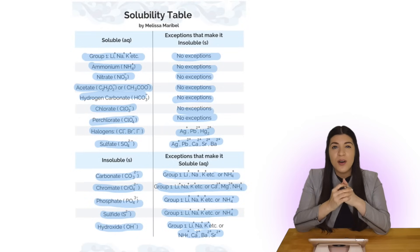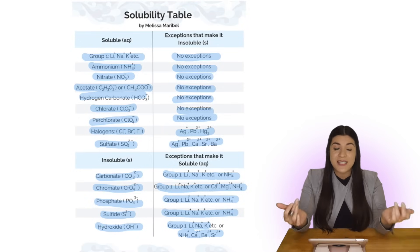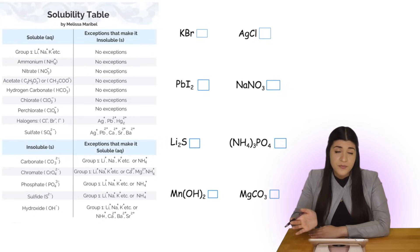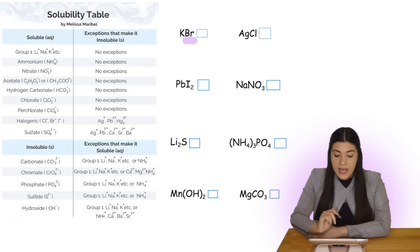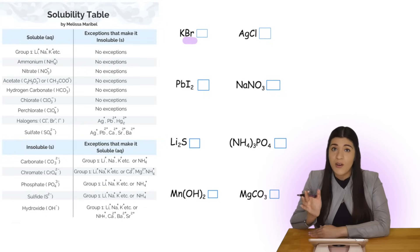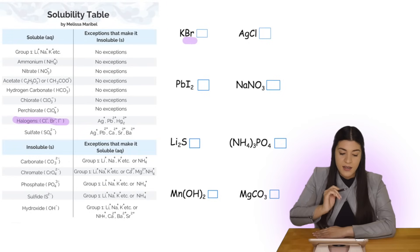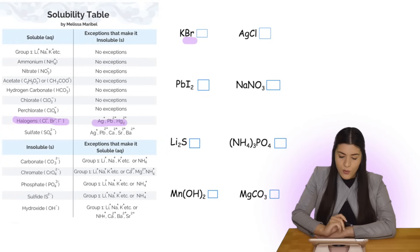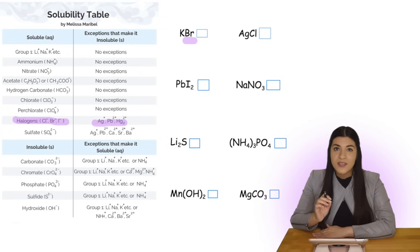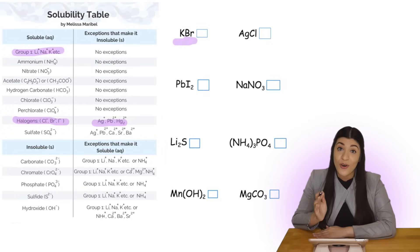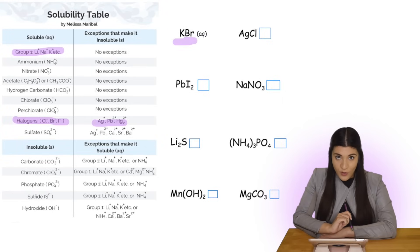Now that you have a better understanding of the solubility table, let's try to predict the solubility of different compounds. In our first example we have potassium bromide. I start with the last element in the compound, so I start with bromine. Bromine is a halogen — typically soluble with the exception of silver, lead, or mercury. Potassium falls under Group 1, which is always soluble, so this compound is soluble — it's aqueous.